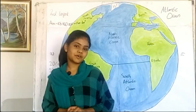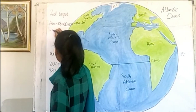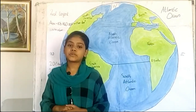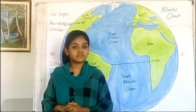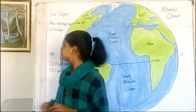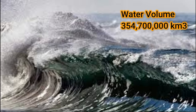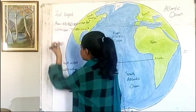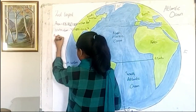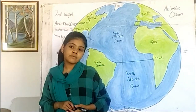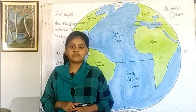Let's see the water volume. Its water volume is 354,700,000 cubic meters. Let's see the average depth. Its average depth is 11,962 feet.